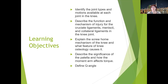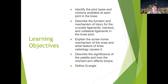I want you to be able to describe the function and mechanism of injury for the cruciate ligaments, the menisci, and the collateral ligaments of the knee joint. I want you to be able to explain the screw-home mechanism and the osteological feature that causes it, describe the significance of the patella in increasing the torque of the quadriceps by increasing the moment arm, and define the Q angle.